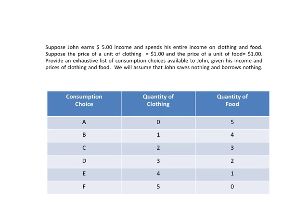Suppose John earns five dollars as income and spends his entire income on clothing and food. Suppose the price of a unit of clothing is one dollar and the price of a unit of food is one dollar. We want to provide an exhaustive list of consumption choices available to John given his income of five dollars and prices of clothing and food at one dollar each. We continue to assume that John saves nothing and borrows nothing.